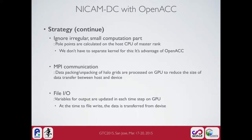For MPI communication, data packing and unpacking of halo grids is processed on the GPU to reduce the size of data transfer between host and device. For file I/O, variables for output — used for monitoring and analysis — are updated each time step on the GPU, and at the time of file write the data is transferred from the device.